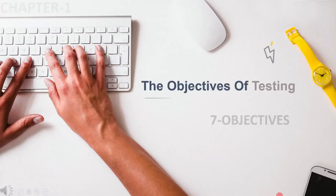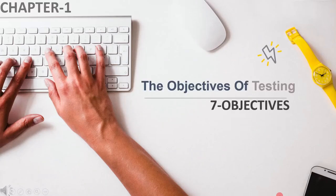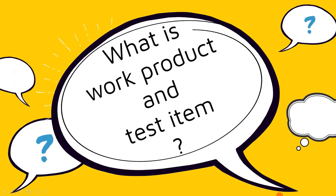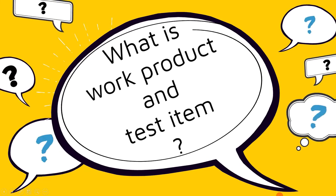In this lecture, we are going to cover the objectives of testing. The learning objective is to identify typical objectives of testing. Since this topic is marked as K1, you have to remember the points. Before we jump to the objectives, you must know what work product and test item mean.